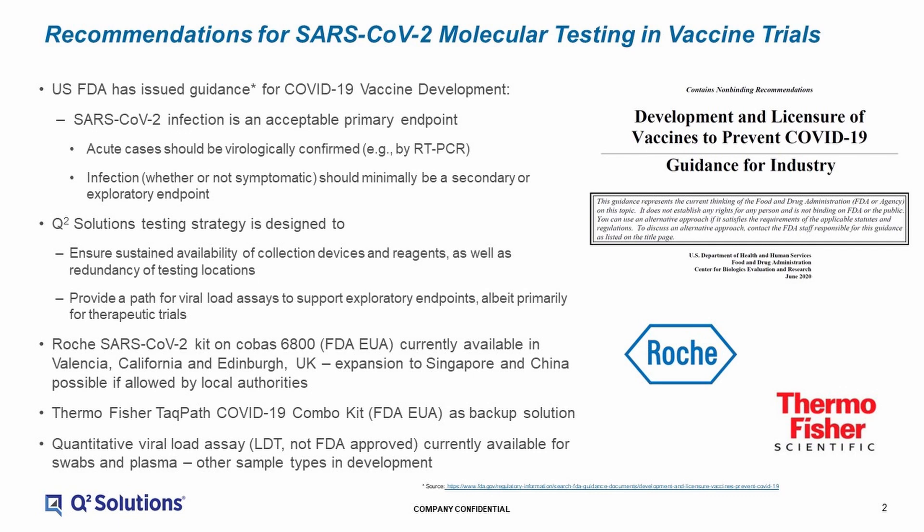We've chosen the Roche SARS-CoV-2 kit, which is run on the COBAS 6800 platform. This has been designated with an EUA — an emergency use authorization — by the FDA. We currently have it available in two locations: Edinburgh in the UK, as well as Valencia, California, where our central laboratory has now processed well over 150,000 samples for SARS-CoV-2 infection using this particular assay. We see the ability potentially to expand in our Singapore and China laboratories, but that will only be possible if permitted by the local authorities. We want to ensure that there is sustained availability of testing.